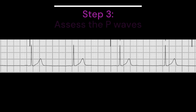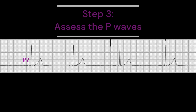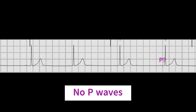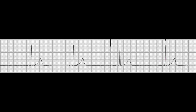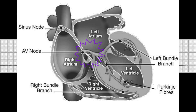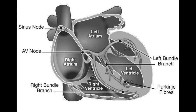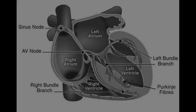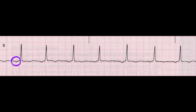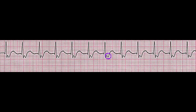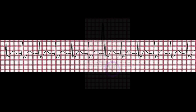Moving on to the P waves. In a junctional rhythm, there will be an absence of P waves. This is because the electrical impulse that initiates the heartbeat is originating from the AV junction, rather than the SA node. As a result, the atria are not being depolarized in a way that generates a P wave. You can have P waves, but they are likely going to be inverted and are found before, during, or after the QRS complex.